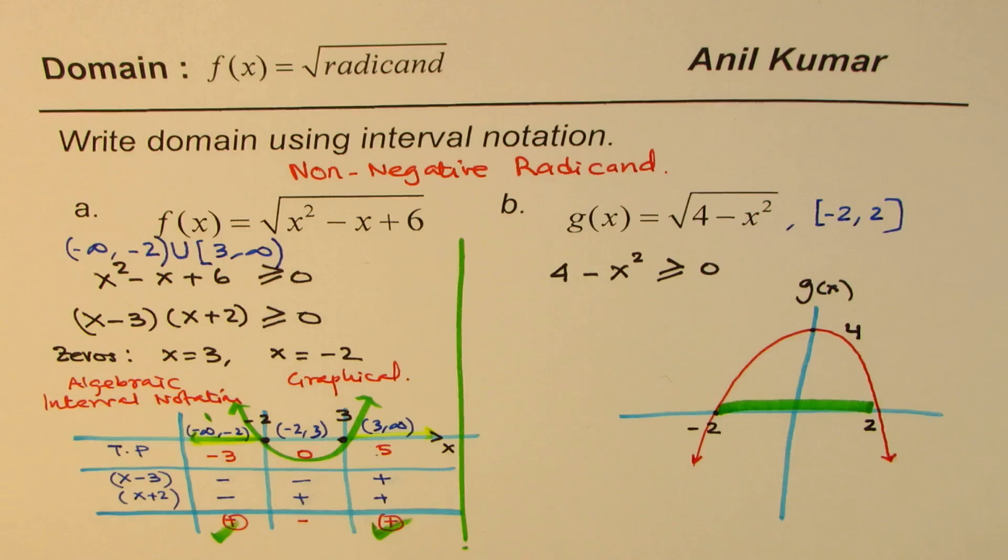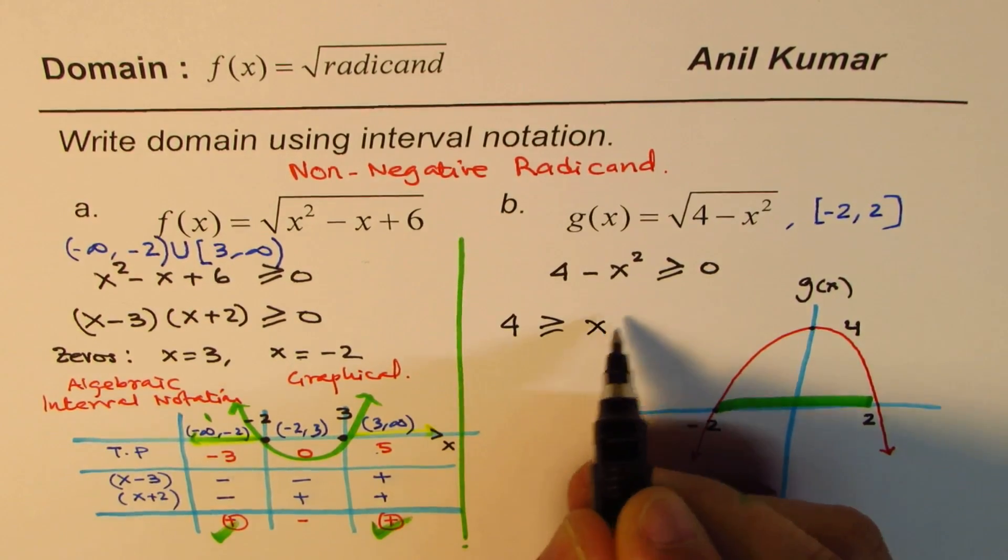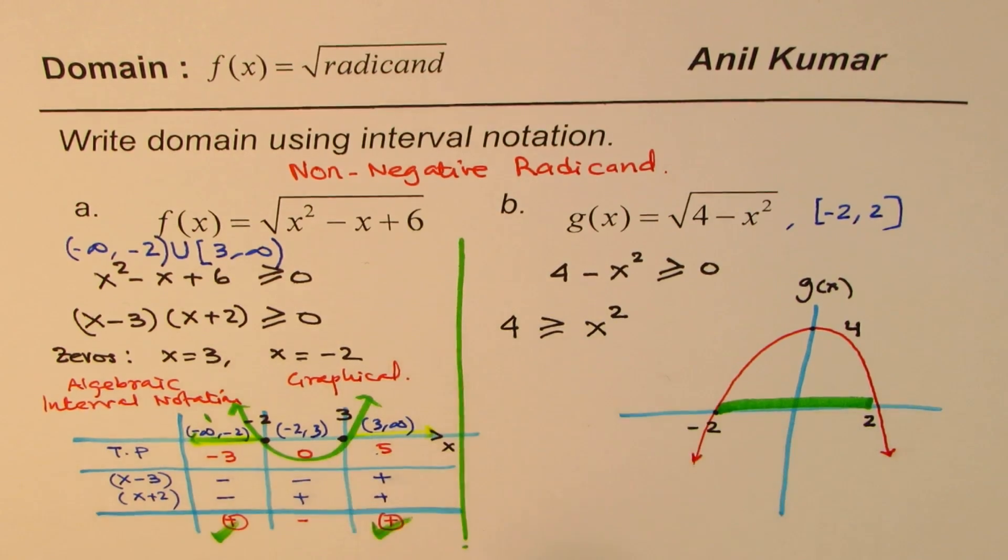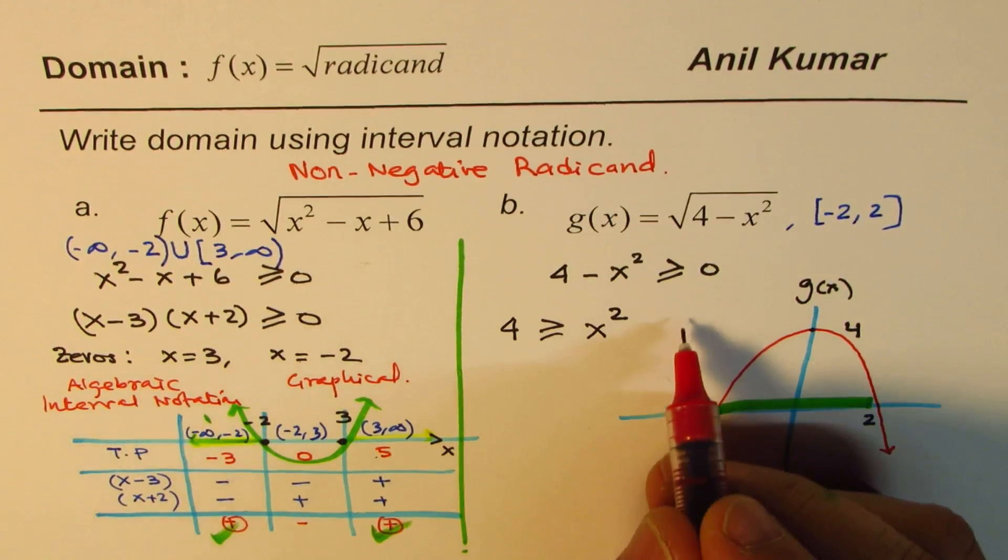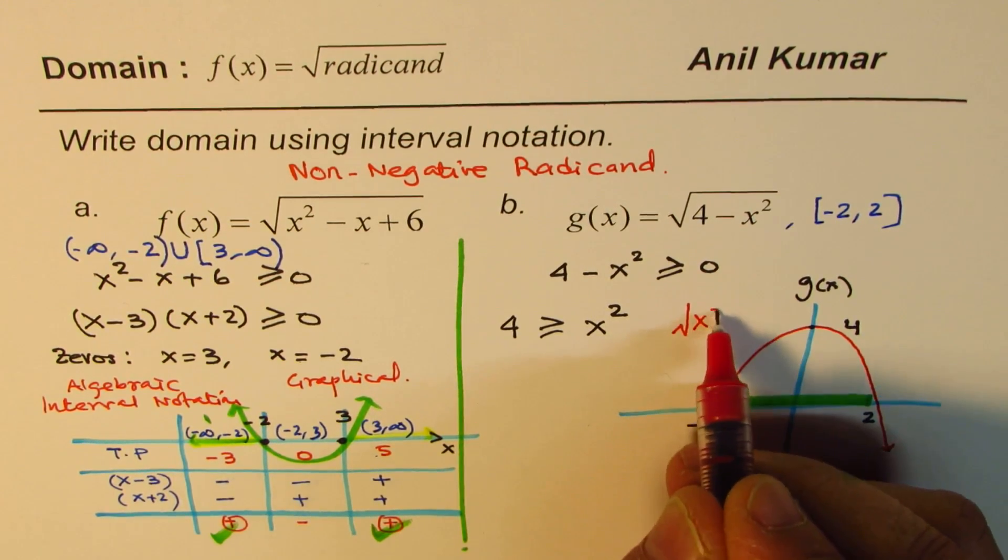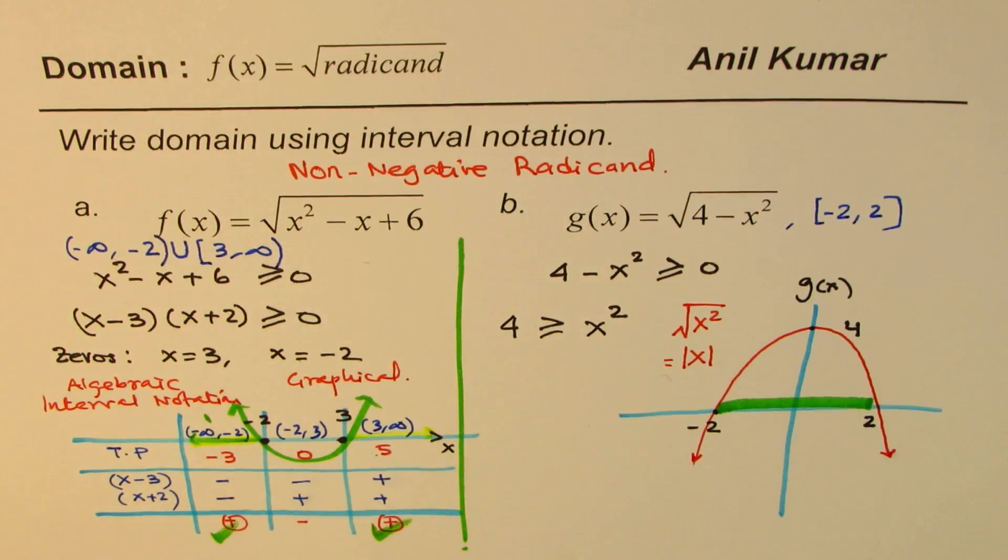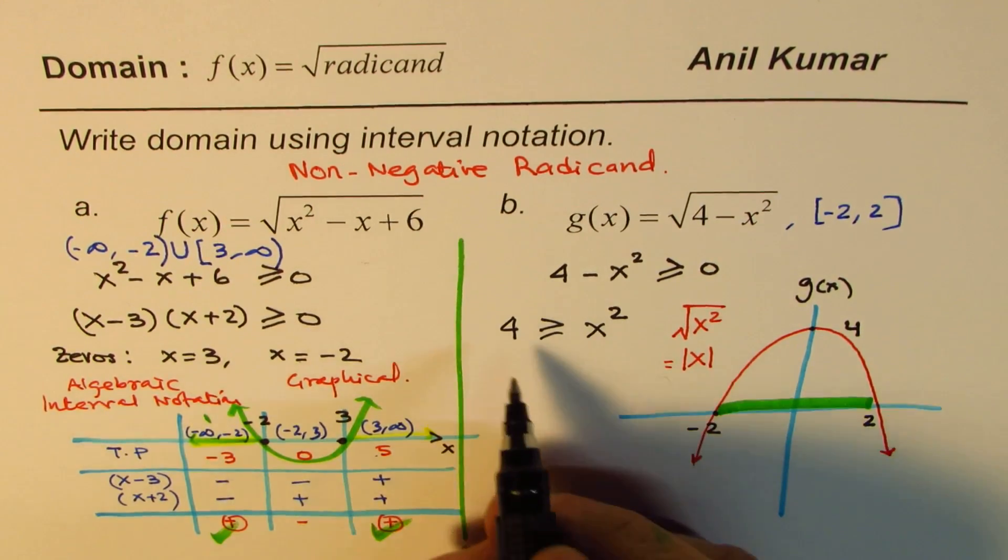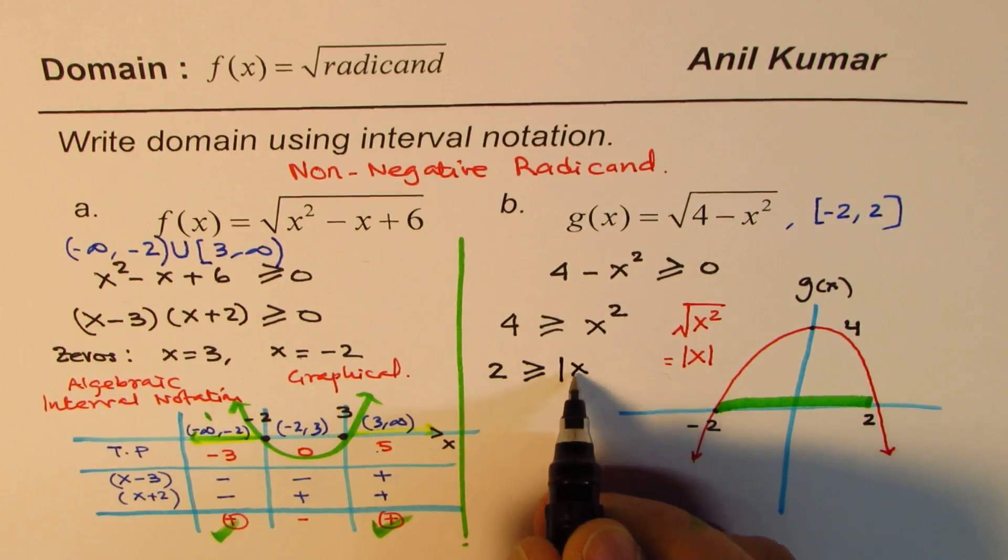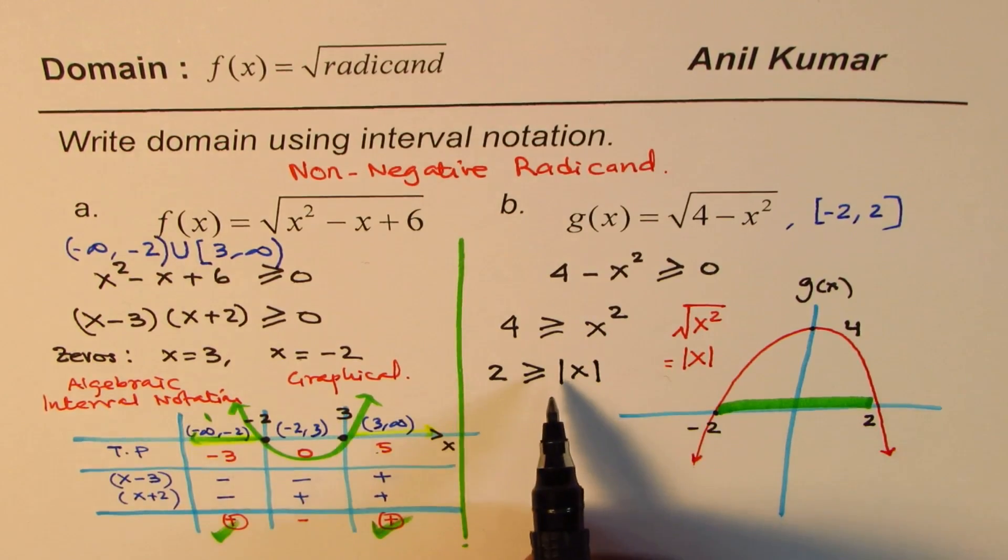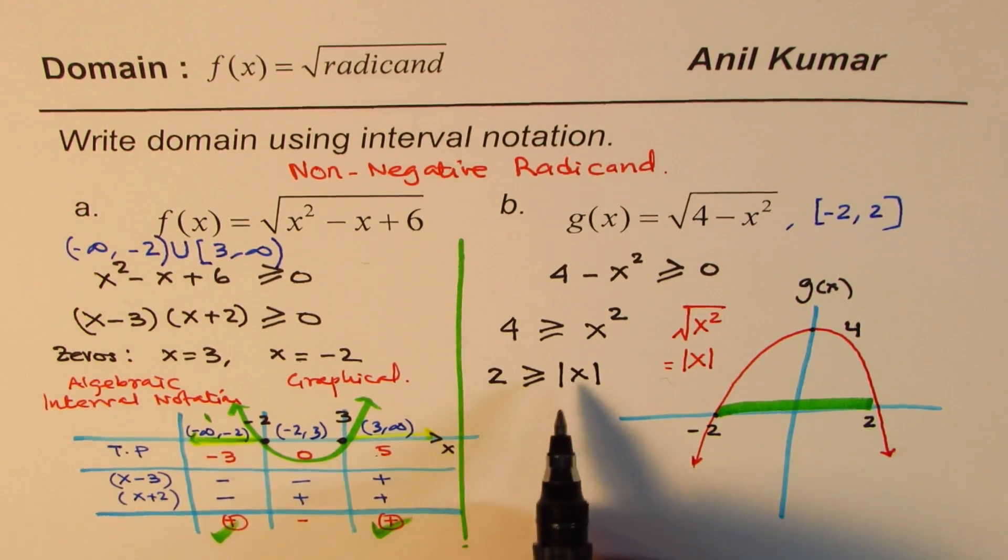Now let us see how to solve this inequality. That is an additional question which I think will help many students. So what we can do here is that we can write 4 is greater than or equal to x squared. And now we square root it. Now what is square root of x squared? What is square root of x squared? What is square root of x squared? That is a big question. Square root of x squared is absolute value of x. Remember that part. So when you square root it, square root of 4 is 2. So we get 2 is greater than or equal to absolute value of x. This is a very critical step in solving inequalities.